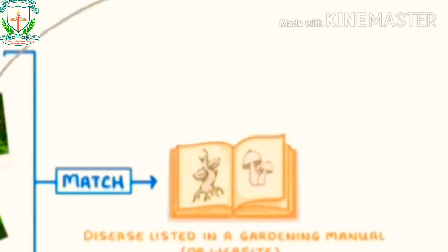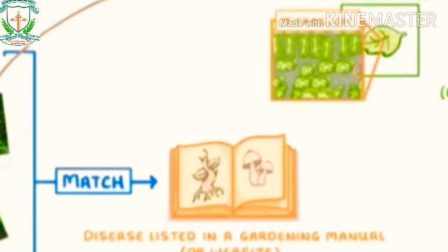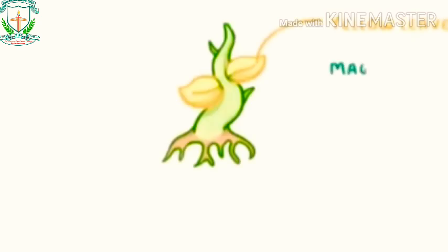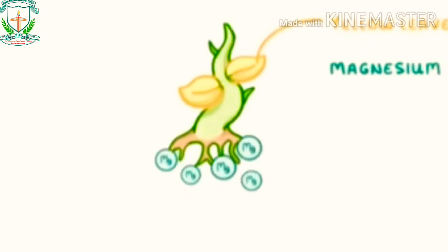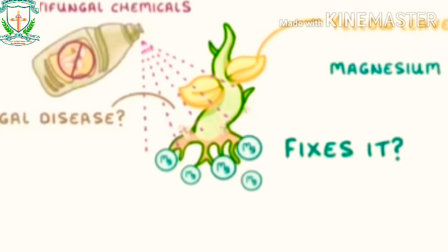If that fails, you could send a sample of the diseased plant to a plant pathologist, who specialises in plant disease and can do more detailed testing. For example, they could take a tissue sample and look at it under a microscope. They could also look for unique antigens from particular pathogens using monoclonal antibodies, or run DNA tests that look for pathogen DNA. A more basic method is trial and error — if your plant has yellow leaves and you think it has a magnesium deficiency, give it some magnesium and see if that fixes it. Or if you think it's a fungal disease, spray it with antifungal chemicals.